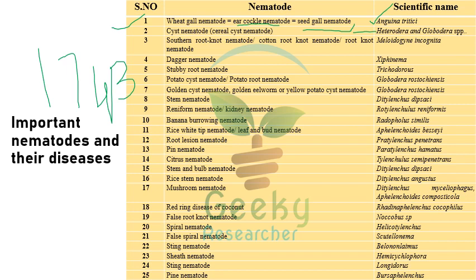The root knot nematode is Meloidogyne incognita. Dagger nematode is Xiphinema species. Stubby root nematode is Trichodorus species. Potato cyst nematode or potato root nematode is Globodera rostochiensis.